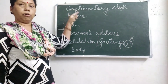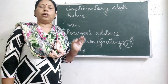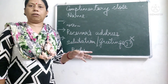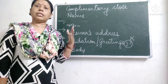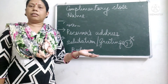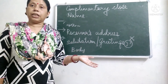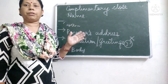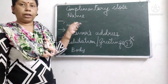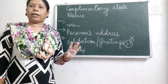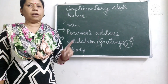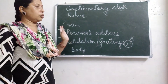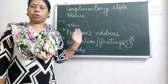Then you have your complimentary close. In complimentary close you write: your loving grandson, your loving granddaughter, yours loving friend, or yours affectionately. So you can use such types of complimentary close. Then you write your name and do not write your surname — if you write your surname your marks will be deducted. So these are the two formats of the two types of letters.